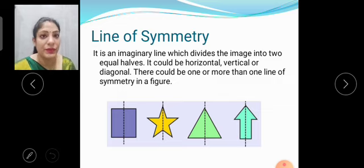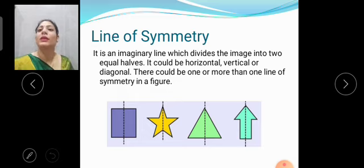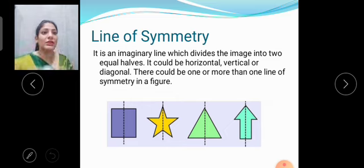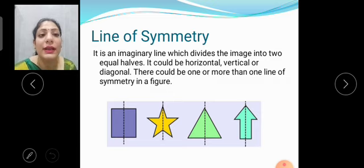Line of symmetry. It is an imaginary line which divides the image into two equal halves. It could be horizontal, vertical or diagonal. There could be one or more than one line of symmetry in a figure. For example, in this figure, we can say this is a line of symmetry and this is also a line of symmetry. So there can be one or more than one. As you can see in this figure, they are representing a line of symmetry.